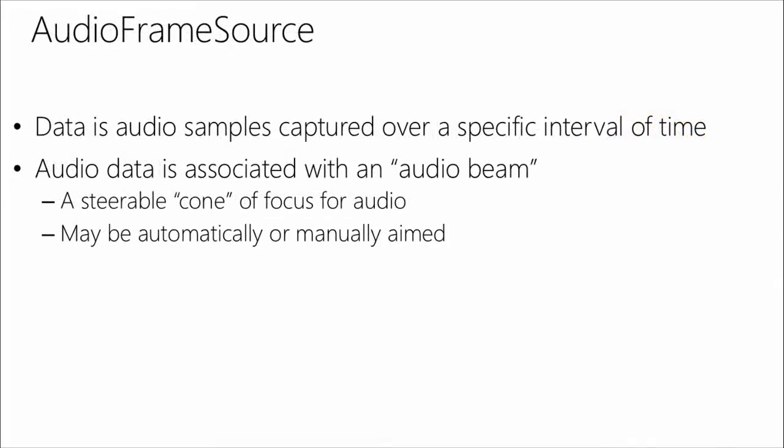On to the audio frame source: audio frames contain samples captured over a specific 16-millisecond interval. The audio data is associated with an audio beam — we have four microphones inside the sensor, which allows us to determine where in a room a sound is coming from and focus on just that sound rather than ambient noise. By default we point the beam at whoever we think is most likely speaking. The application can also direct the beam in a specific direction, for example pointing it at the skeleton of the engaged user.